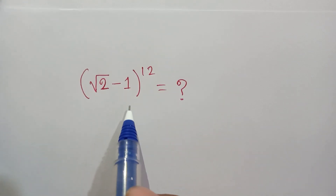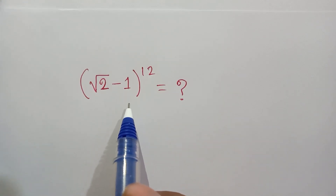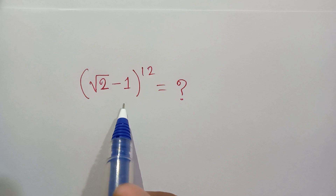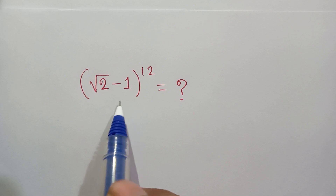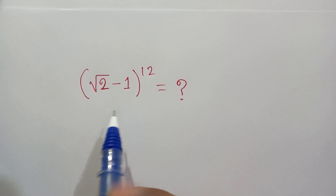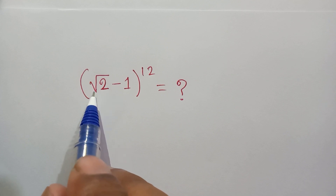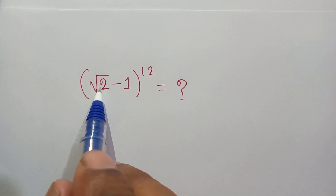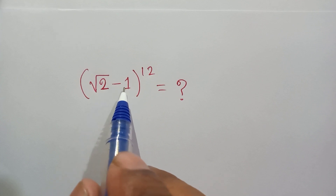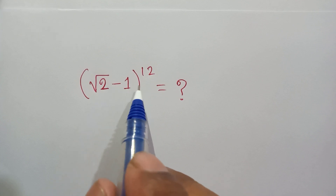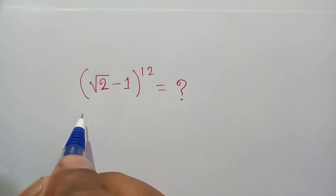Hello everyone, welcome. We are going to solve a very big math problem. I am going to show how to solve this easily without a calculator. Here we have given the square root of (√2 - 1) whole to the power 12. So let's try to solve this.